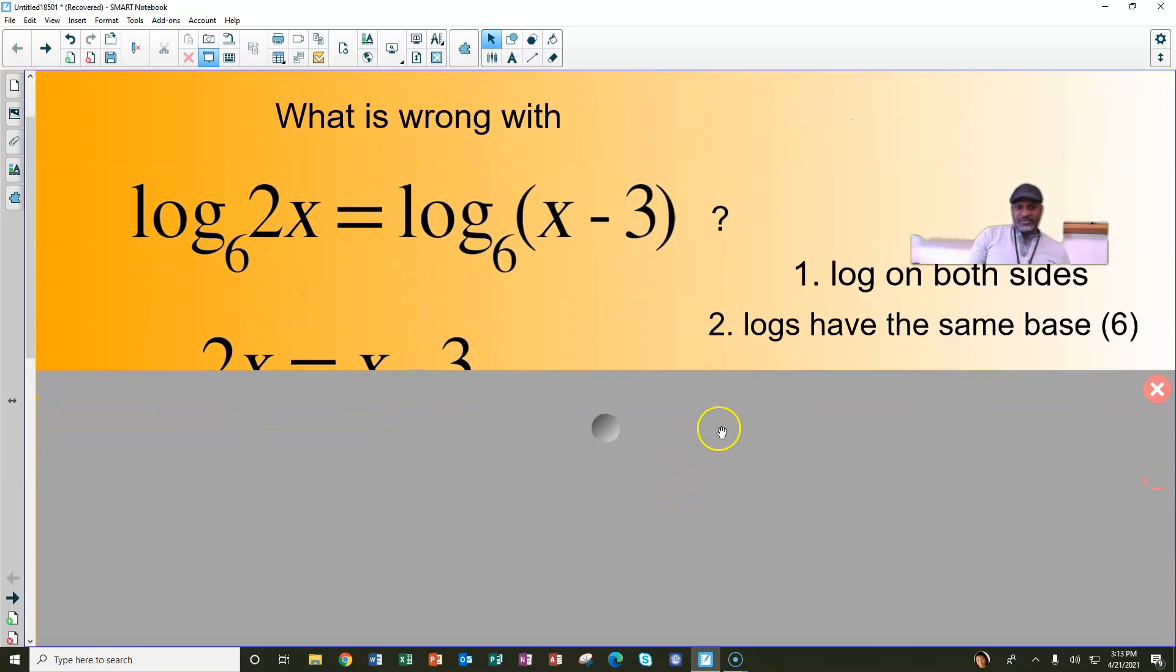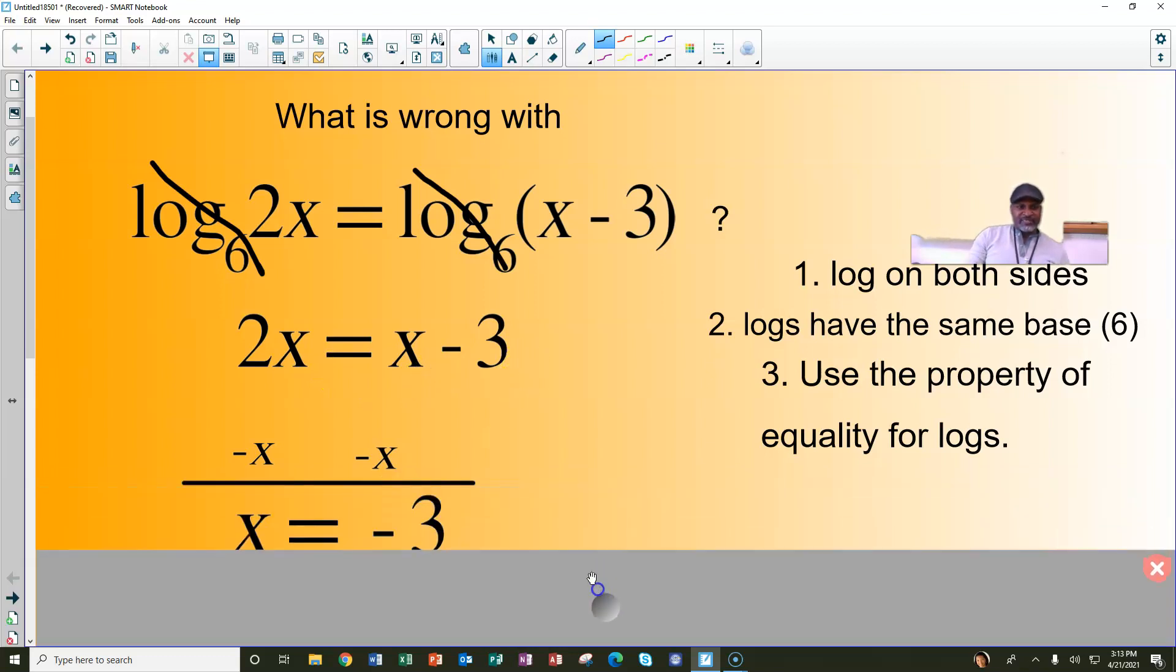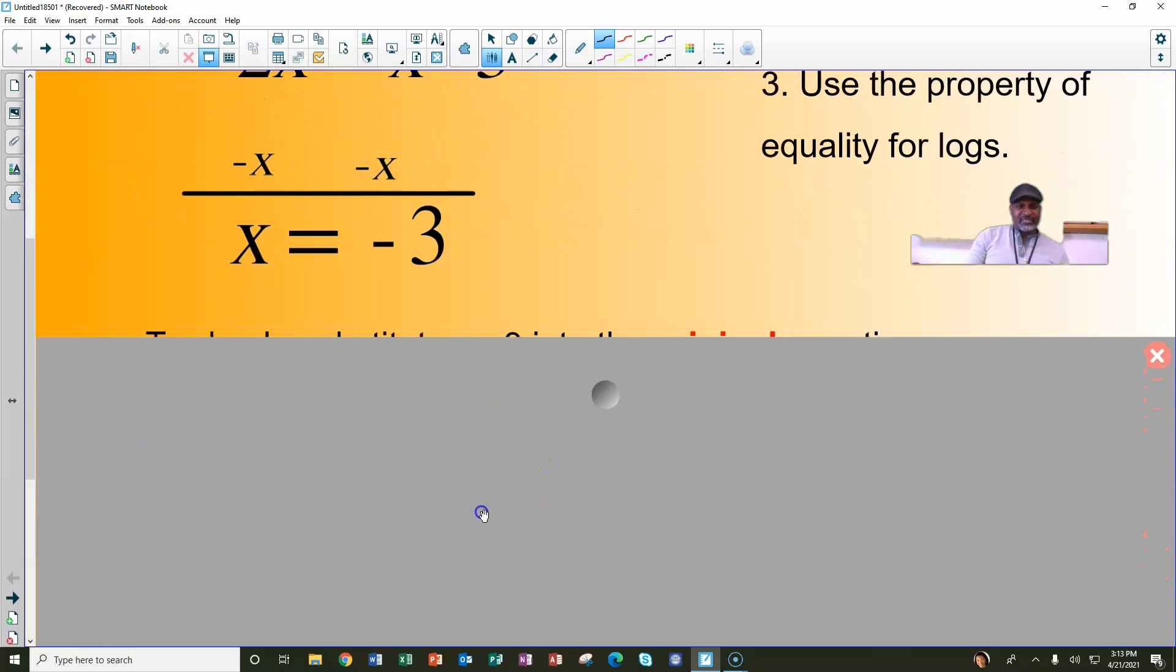So that means we can use the property of equality for logs, and we can basically cross them out. That leaves us with 2x equals x minus 3, which we can solve by subtracting x from both sides and end up with x is equal to negative 3.